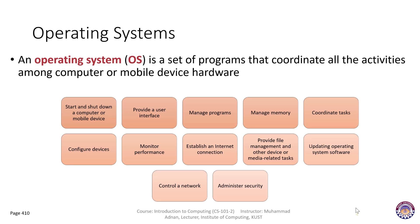So what is an operating system? You have been hearing about operating systems — mobile operating systems, computer operating systems, and other types. An operating system is a set of programs that coordinates all the activities among computer or mobile device hardware. Examples include the Android operating system, iOS operating system, Windows 8, Windows 10, and the Apple Macintosh operating system.